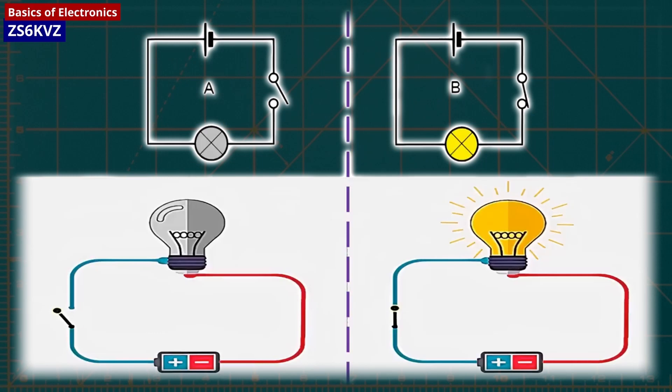Normally open switches close the circuit when activated, and normally closed switches open the circuit when activated.